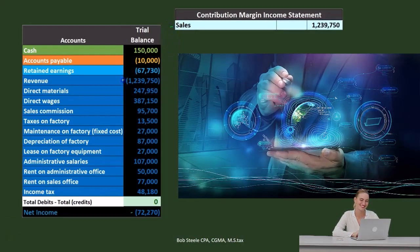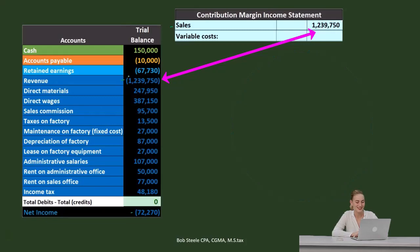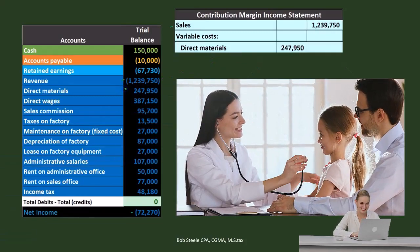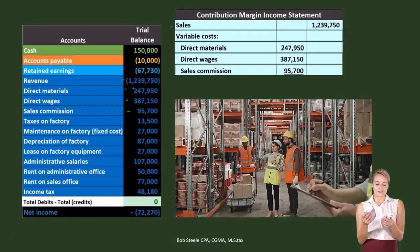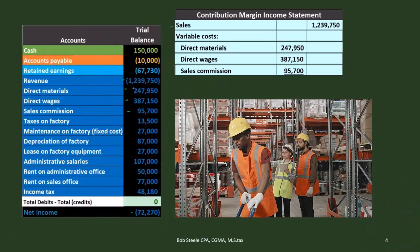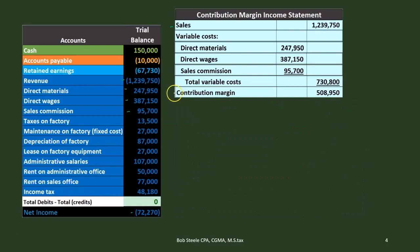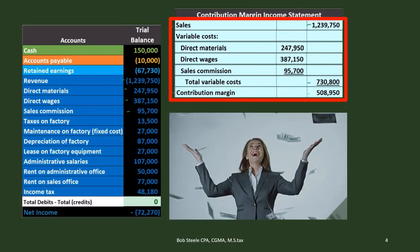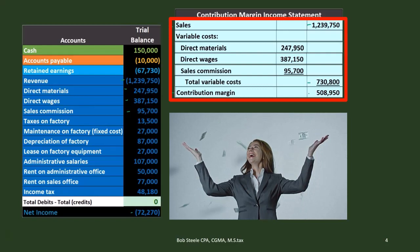We're still going to start with sales. But instead of cost of goods sold, we're going to talk about variable costs — variable by behavior, not by category. Variable costs include direct materials, direct labor, and sales commission. It may seem funny to group inventory production costs with selling costs, but it makes perfect sense for projection purposes — they all behave the same way. Total variable costs are $730,800. Then we get the contribution margin, which is sales minus total variable costs. The contribution margin is the most important number here, representing the relationship between sales and variable costs.